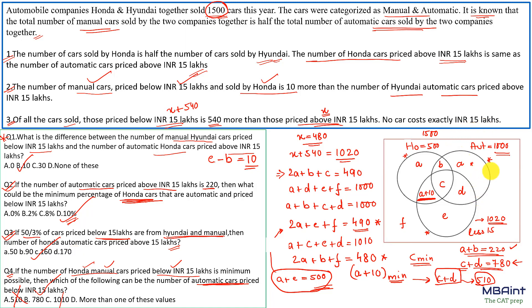Overall, the key to solving this problem was recognizing it as an advanced Venn diagram question. Once you identify the structure, it's straightforward — just identify the regions, place the values, and solve what's asked. Thank you.